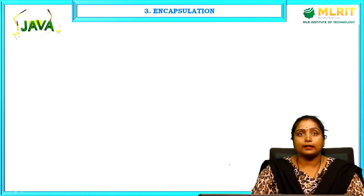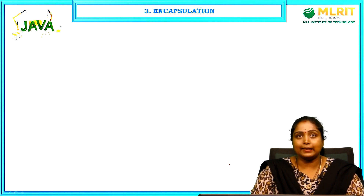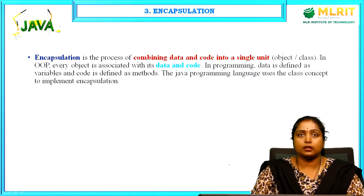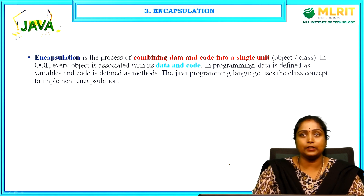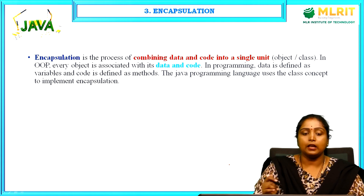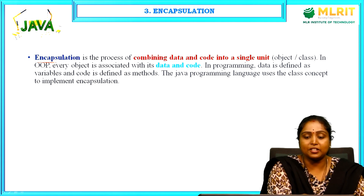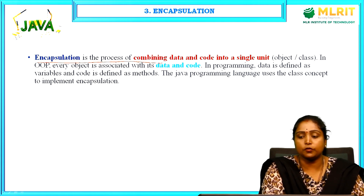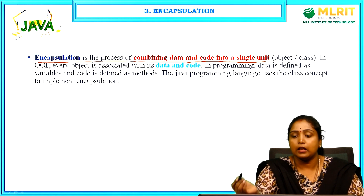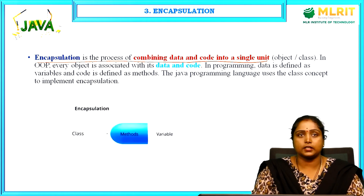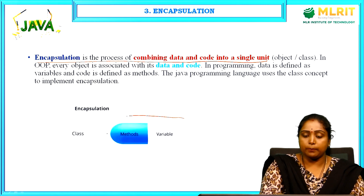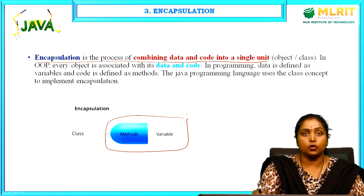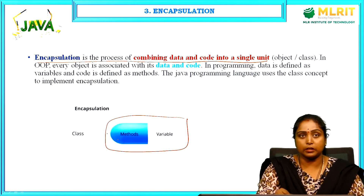The next concept is encapsulation. Encapsulation is the process of combining data and code into a single unit — binding the data and code together. This binding happens inside a particular class, and this concept is called encapsulation.